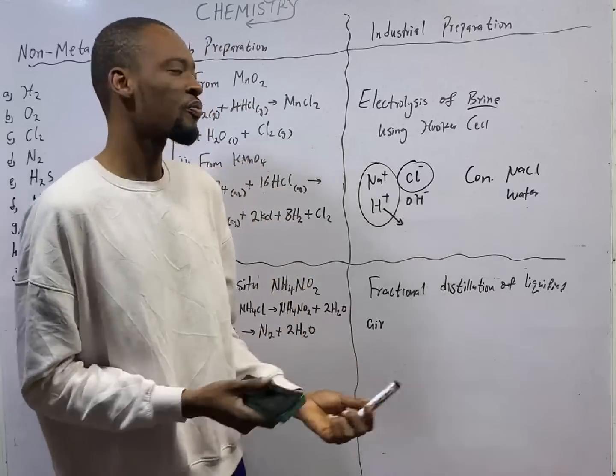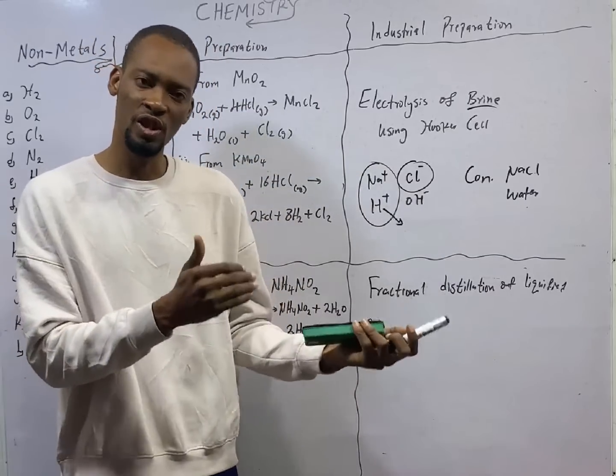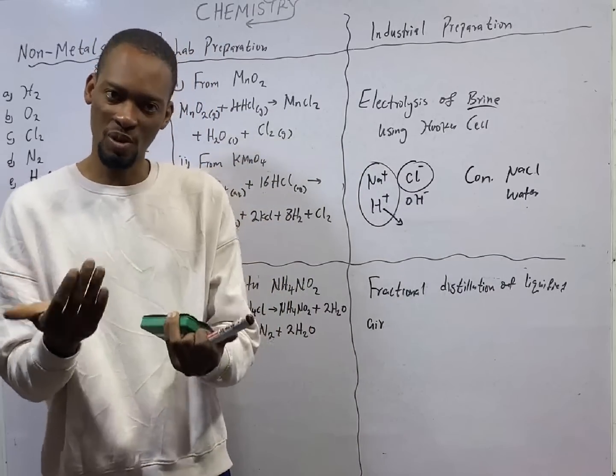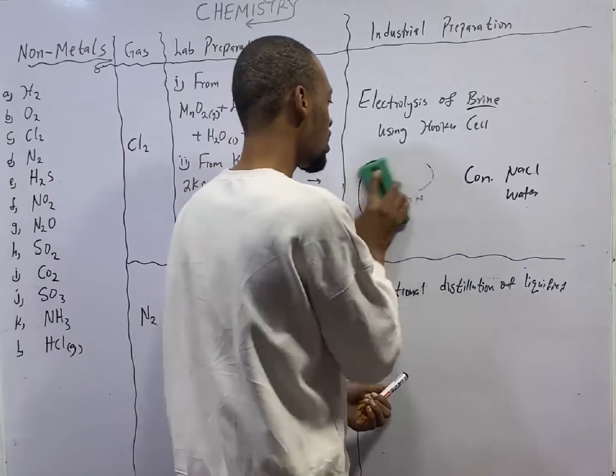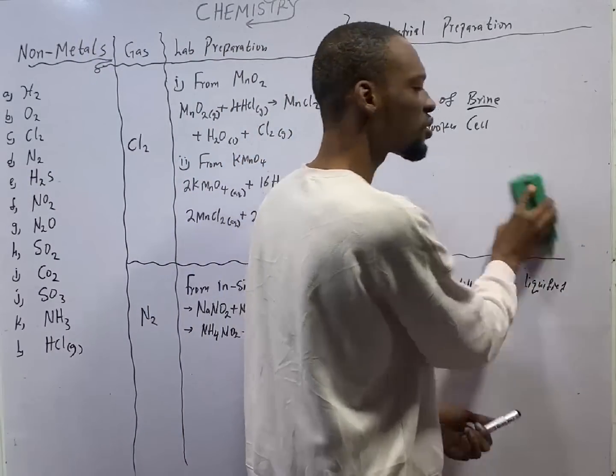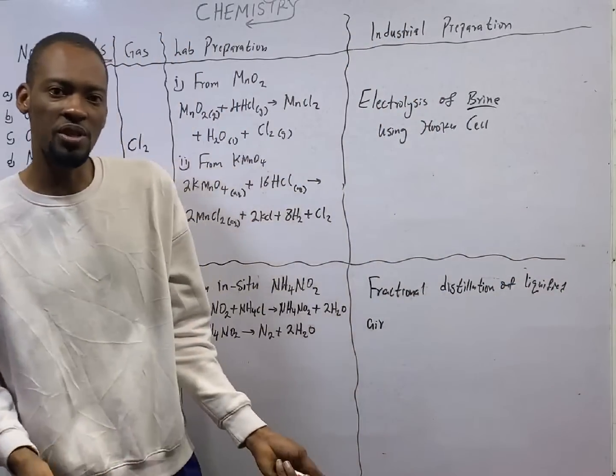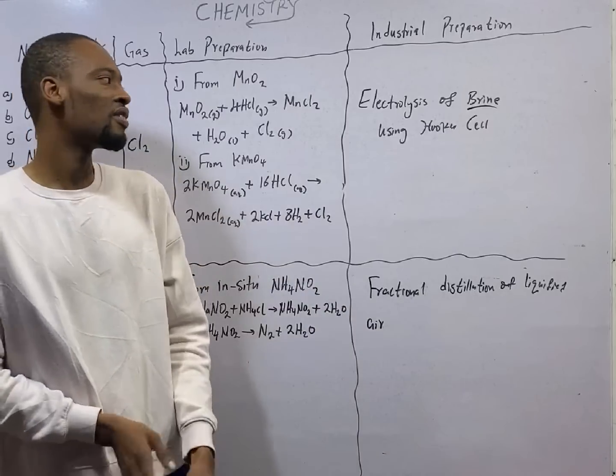Remember, at the cathode, reduction takes place and at the anode, oxidation takes place. And what is oxidation? Loss of electrons. What is reduction? Gain of electrons.